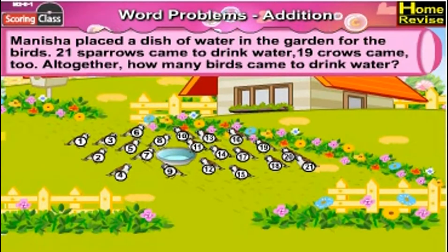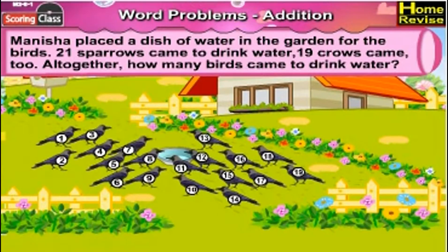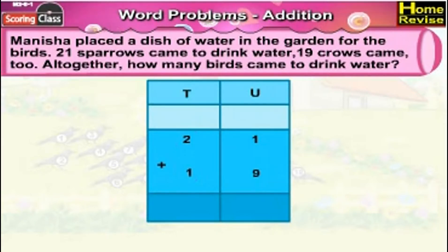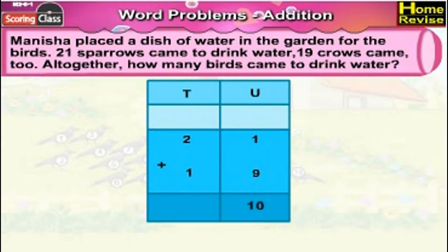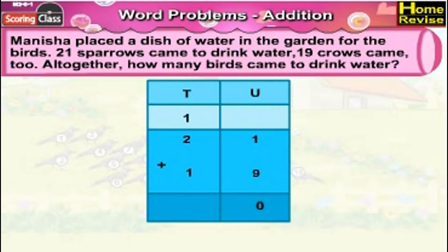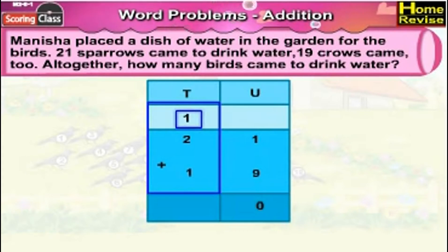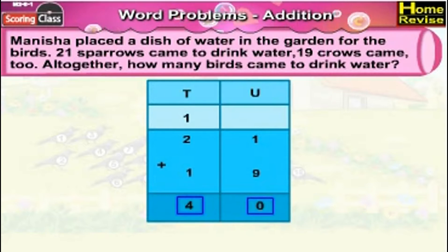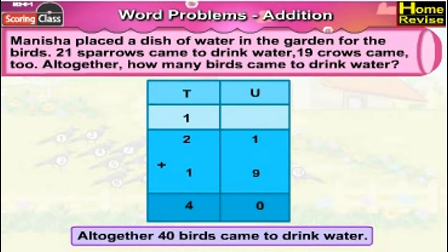There were 21 sparrows and 19 crows, so let us arrange them. In the units place we have 1 plus 9, and in the tens place we have 2 plus 1. Now, 1 unit plus 9 units is 10 units — write 0 in the units place and carry forward 1 in the tens place. Under tens place we have 1 ten plus 2 tens plus 1 ten, that is 4 tens. So, it is 4 tens plus 0 units, which means 21 plus 19 is 40. Altogether, 40 birds came to drink water.